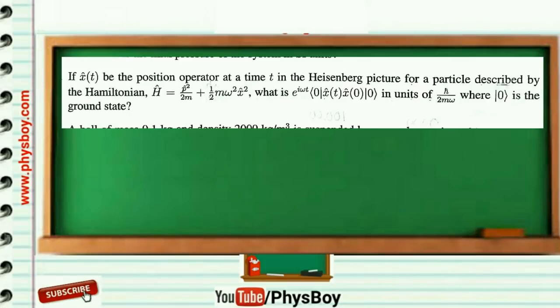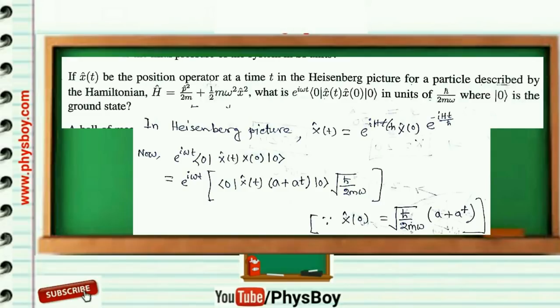If x(t) is the position operator at time t in the Heisenberg picture for a particle described by the Hamiltonian H, you have to find the value of a certain quantity in units of ℏ/2mω, where |0⟩ is the ground state. In the Heisenberg picture, x(t) = e^(iHt/ℏ) x(0) e^(−iHt/ℏ). For the harmonic oscillator, x(0) = √(ℏ/2mω)(a + a†).